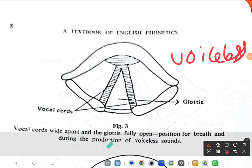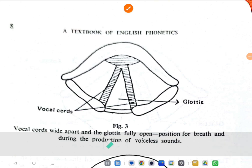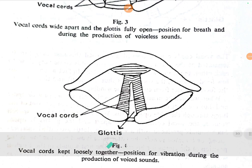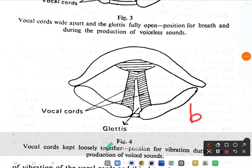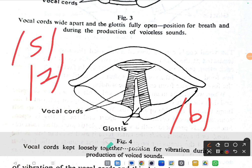Voiceless means the air just goes out; the vocal cords are wide apart. But certain sounds like ba, da — for example when you say sa and za — you can understand: when you say sa it flows freely, so this is a voiceless sound. But when you come to the za sound, there will be vibration in the vocal cords.